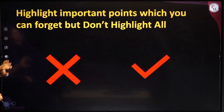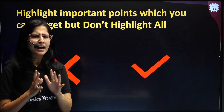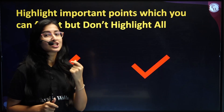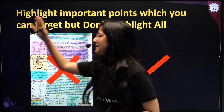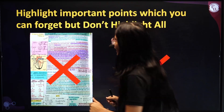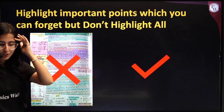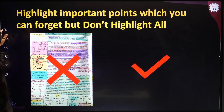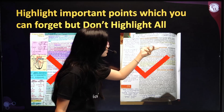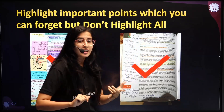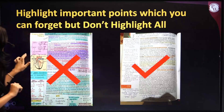The next point is to highlight important points — things you might forget — but don't highlight everything. Here is a good example of how you should highlight: highlight only the most important things within a paragraph, and write out the rest. This selective highlighting approach will help you during revision.